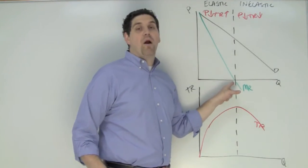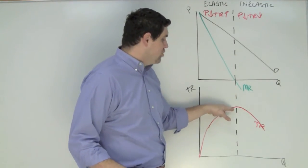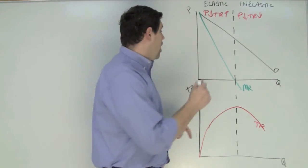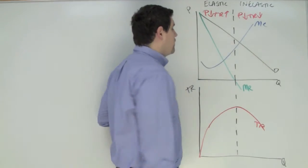Don't assume that a monopoly should produce when MR hits zero. That is where the total revenue is maximized but not where profit is maximized. So let me put in a marginal cost curve. This is the marginal cost curve right here.